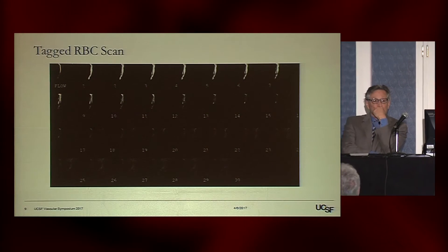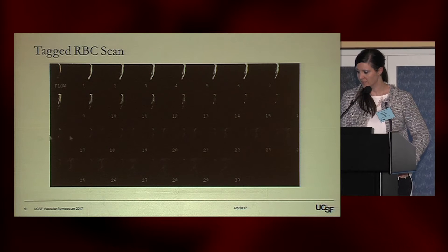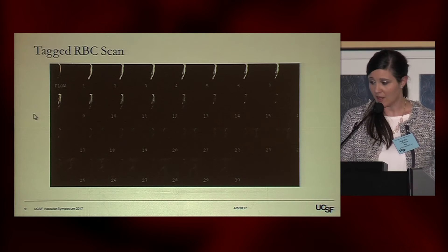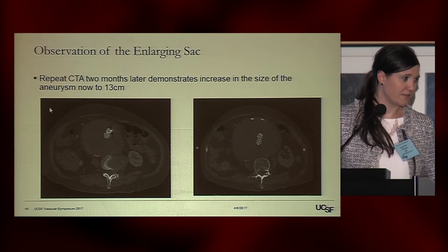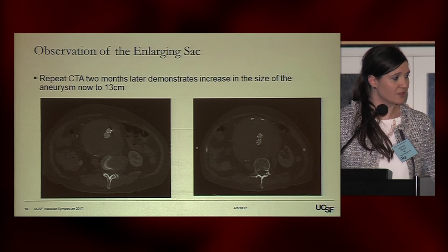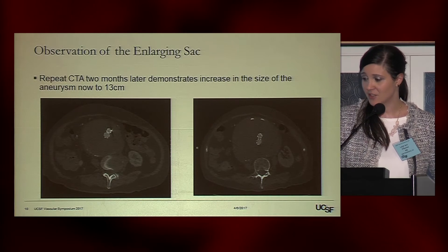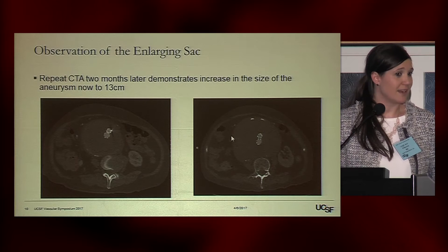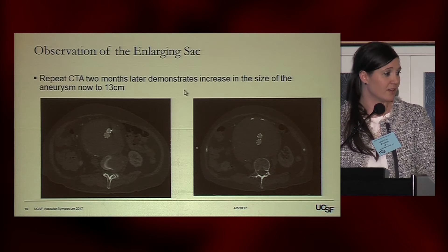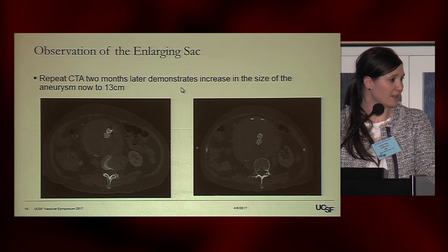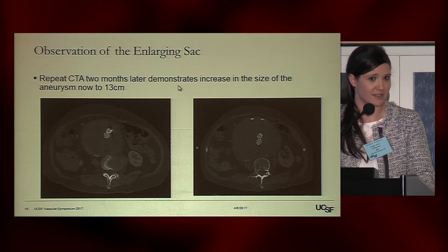We did a tagged red blood cell scan after the negative angiogram and CT scan, and we couldn't find anything—there was no evidence of active uptake within the aneurysm sac. We had a long discussion with the family and patient, and they were not interested in any surgical options at that time. They wanted to wait. A repeat CTA two months later showed the aneurysm still growing, now at about 13 centimeters. Another discussion was had with the family, and they are still mulling it over. He's still alive and hasn't ruptured yet, but he's out there with a 13-centimeter aneurysm.